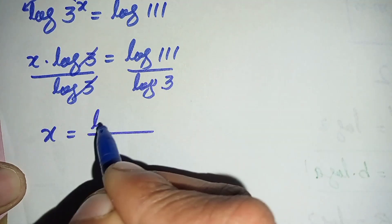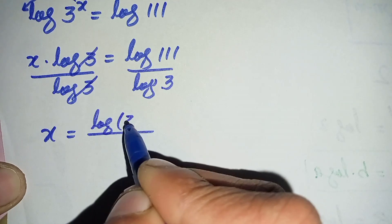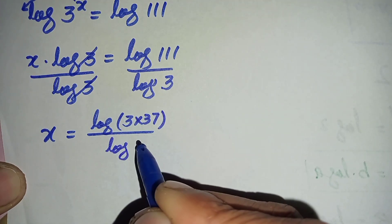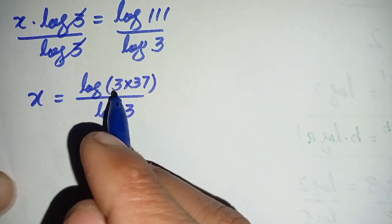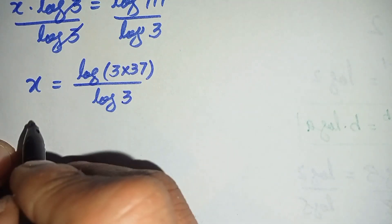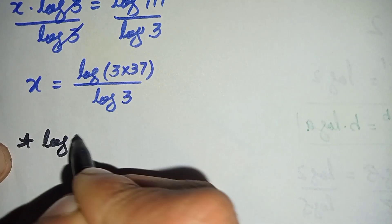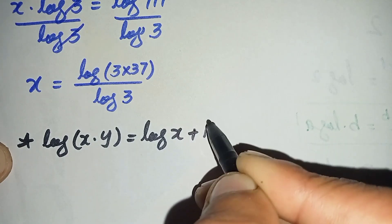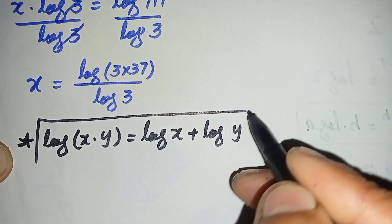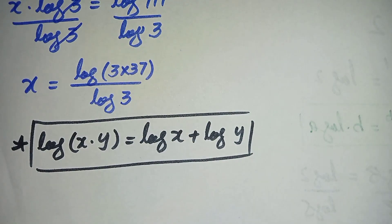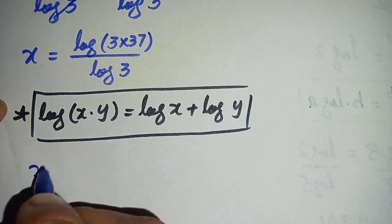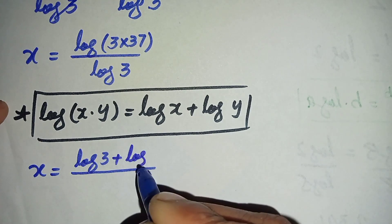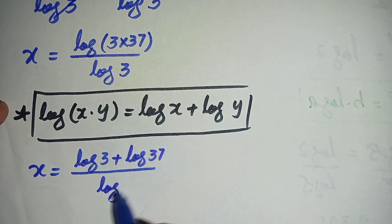Now here in the numerator we can write log of 111 as log of 3 times 37, because 3 times 37 is 111, divided by log of 3. Now in the numerator we will use another log property: log of x times y can also be written as log of x plus log of y.